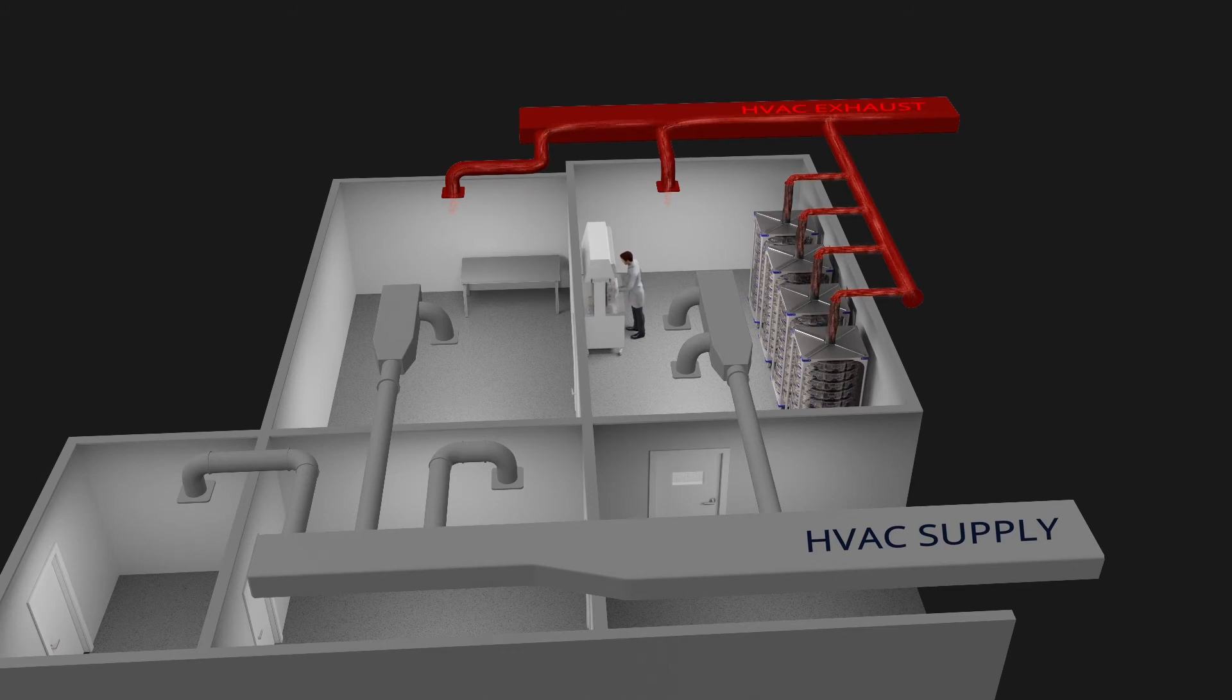With this integrated approach, Animal Care Systems utilizes the room's building exhaust system to both pull the air out of the room and also pull the air through the rack.